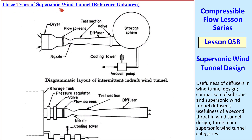I'll discuss three types of supersonic wind tunnel. The first is called an intermittent in-draft wind tunnel, where — like my subsonic wind tunnel — the flow comes in from the room, goes through a converging-diverging nozzle, a second throat, and a subsonic diffuser, and then into a big tank pumped out by a vacuum pump. This is a suction-type wind tunnel. You start with near vacuum in the tank, but as flow comes through, the pressure keeps rising until you lose supersonic conditions in the test section, and then you have to stop and vacuum it out again.